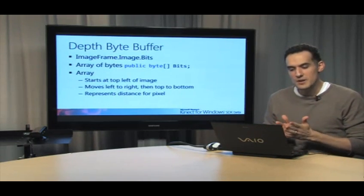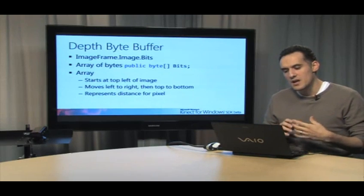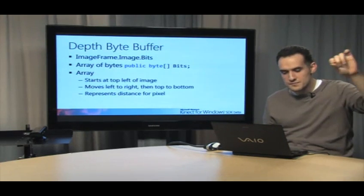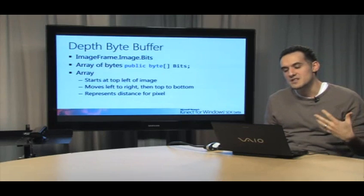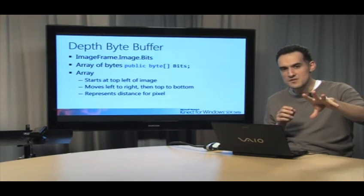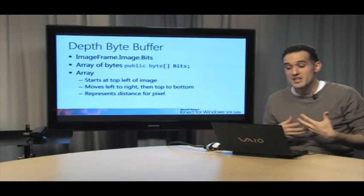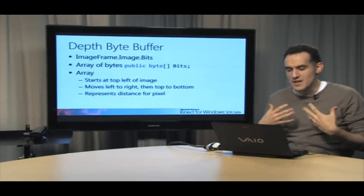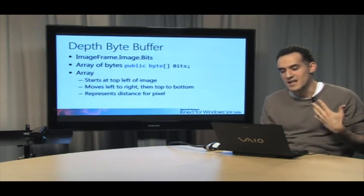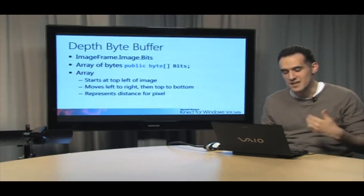So remember this is image frame dot image dot bits. It's an array of bytes. And the way the array is structured is that it starts at the top left of the image and then moves left to right in rows, then top to bottom. And basically it's a representation of a distance for pixel. In our very first video we talked about how there's a connect projector and a connect sensor. The projector is projecting infrared, the sensor is determining how long it took that infrared data to bounce back, and determining the distance for each pixel. So that's at a very high level what's going on and how the array of data is structured. So we have distance data inside that bits array, not red, green, blue data. That's what we're actually going to build based on that distance data.